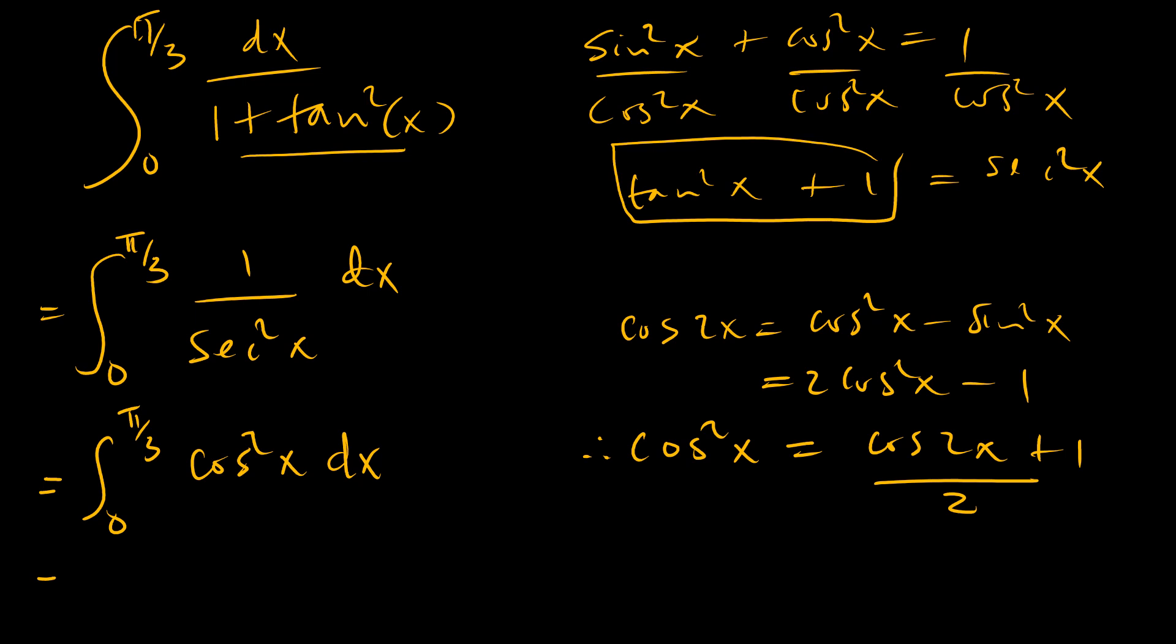So what that allows us to do is now we have our integral from 0 to pi over 3 of cosine 2x plus 1.